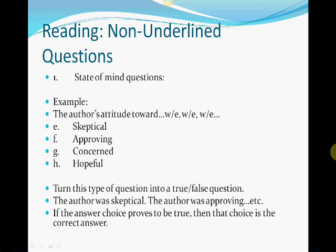Now, what about those non-underlined questions? The first type is state of mind questions — for example, 'the author's attitude towards [topic]' with options like skeptical, approving, concerned, or helpful. Turn this type of question into a true or false question. For example: was the author skeptical — true or false? If it's false, that's not the correct answer. If it's true, that is the correct answer. Turn these types of questions into true or false answers.